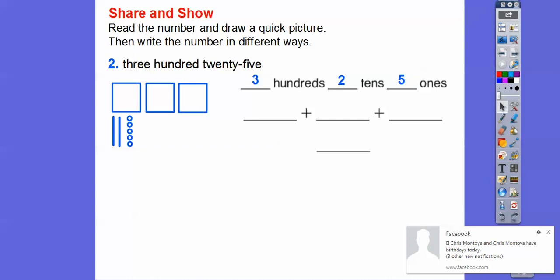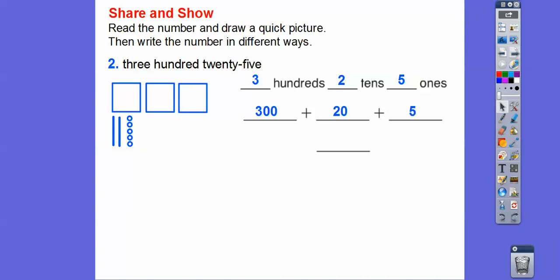And then we're going to go ahead and do 300 right here. So 300 is going to go right there. And then there's 20 and then there's 5 right there. And this would be 325.